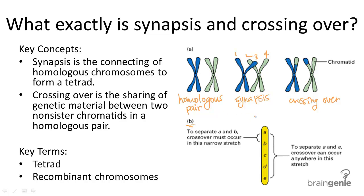Crossing over between gene A and B is less likely to occur than crossing over between A and E, because there's only a small amount of space to cross over between A and B, whereas there's much more space to cross over between A and E. A crossing over between A and E could happen anywhere along that space — here, here, here, or here — many more possibilities than between A and B. The rule is: the further apart two genes are, the more likely a crossover will occur and the genes will be separated.